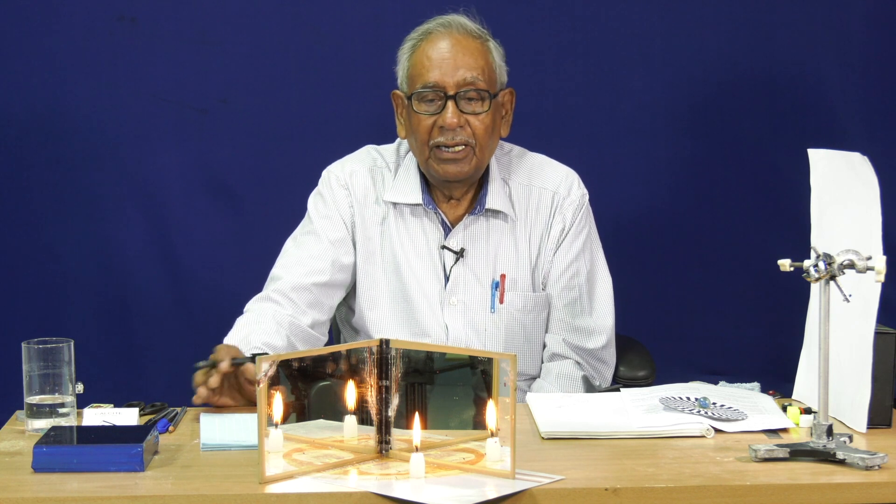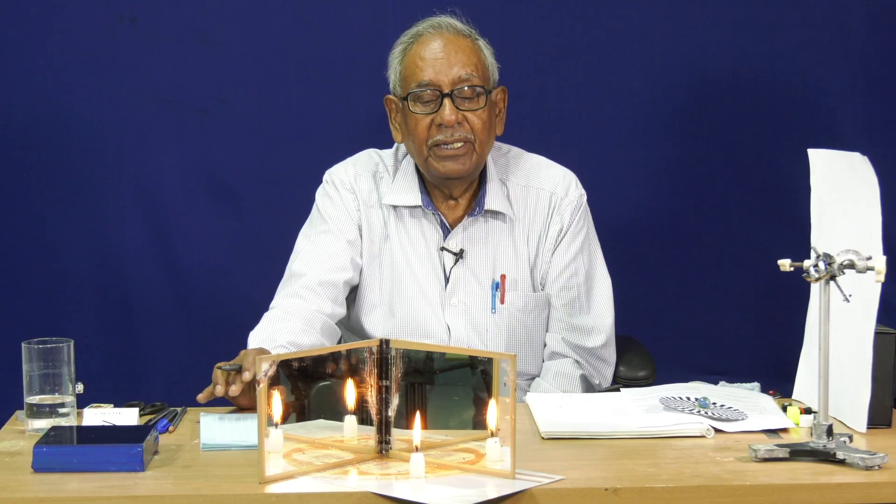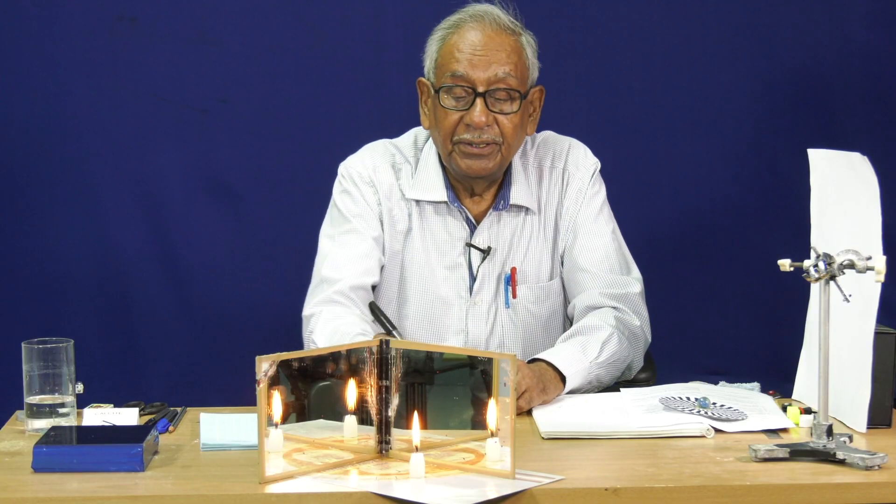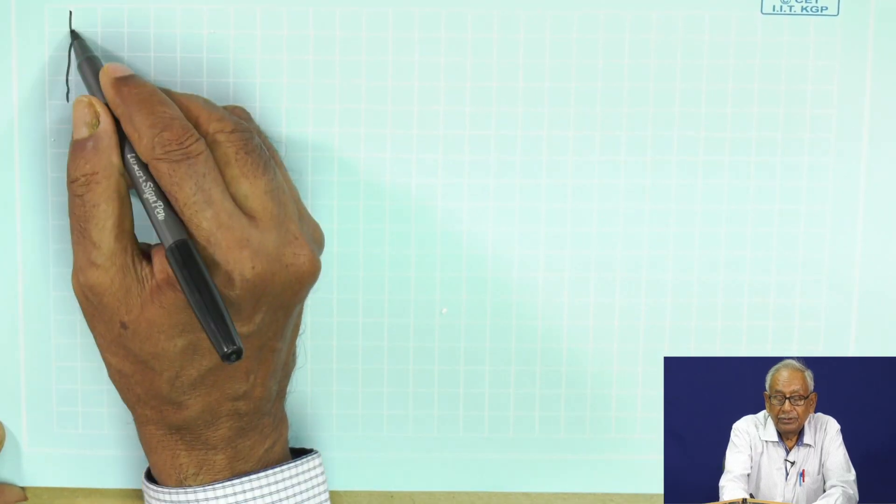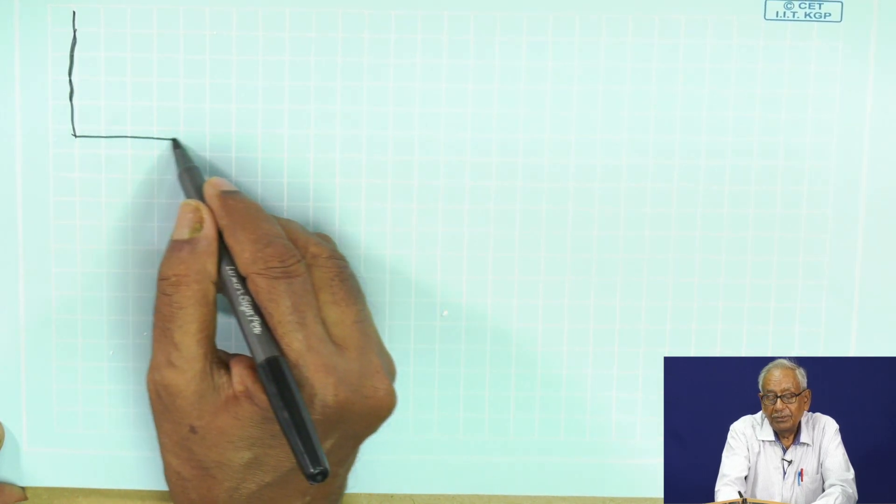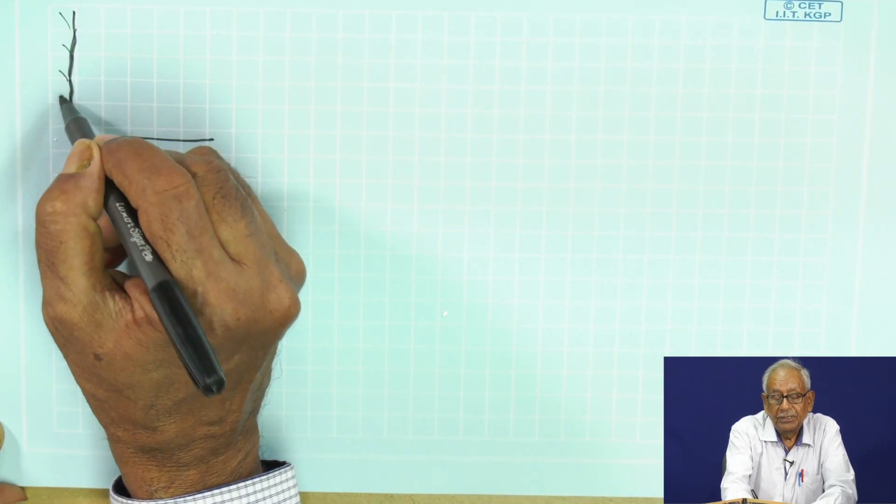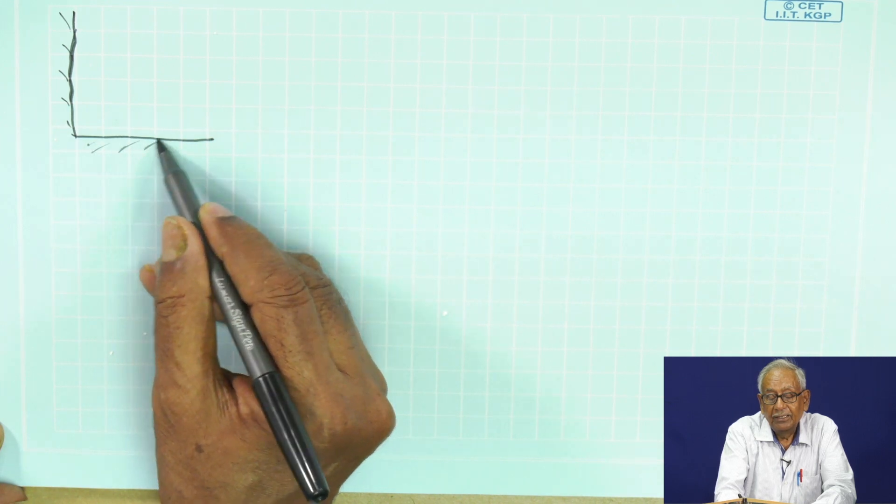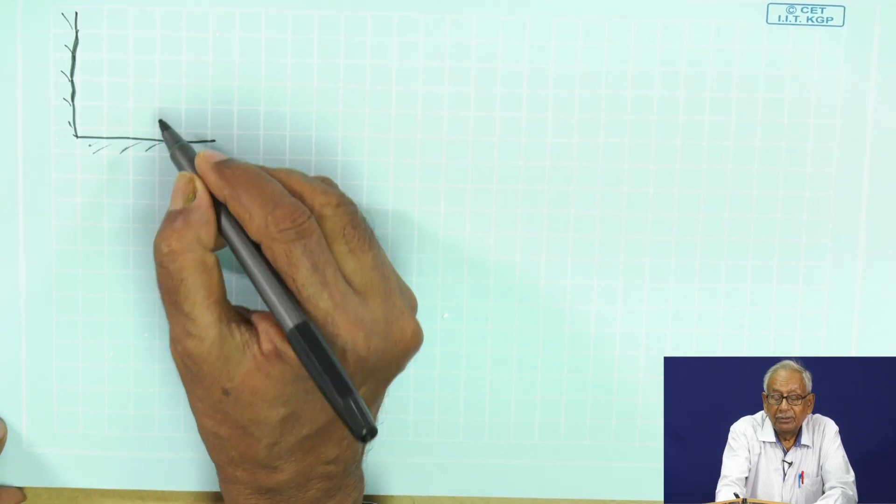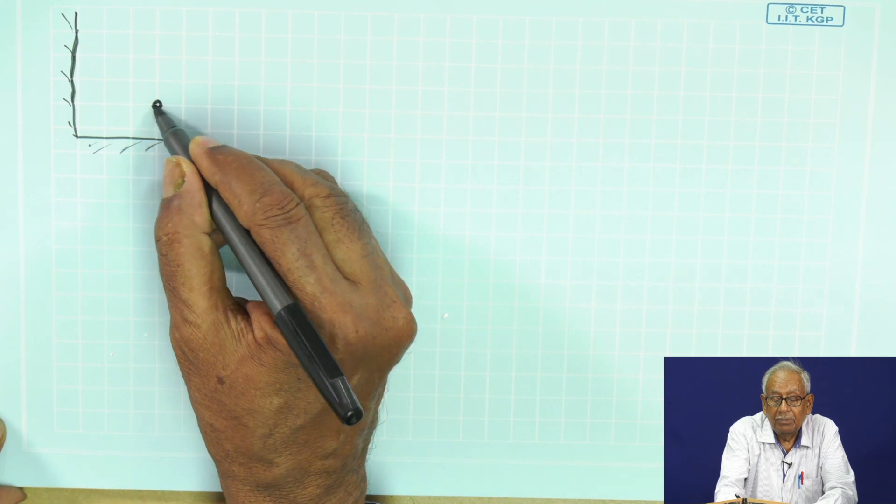But now these two mirrors are placed at an angle of 90 degrees, and a candle is burning near one of the mirrors.